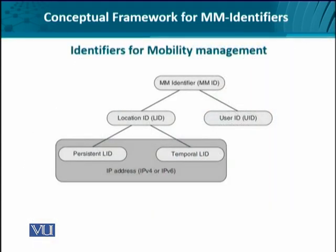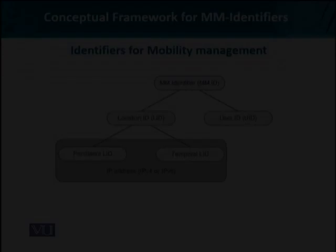This is the overall representation of the identifiers used for managing mobility. User IDs are quite straightforward. The location ID can be represented as a persistent location ID or a temporary location ID, together forming the identity and location ID framework for mobility management.